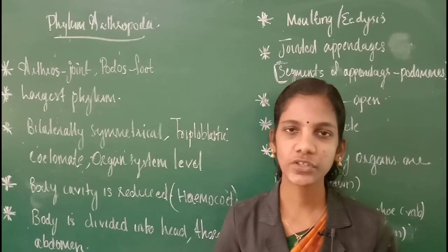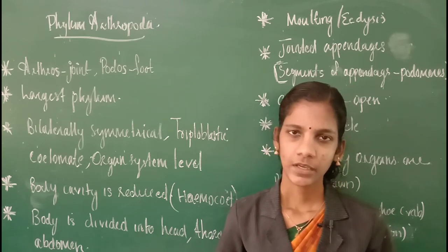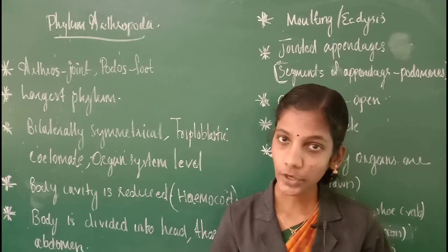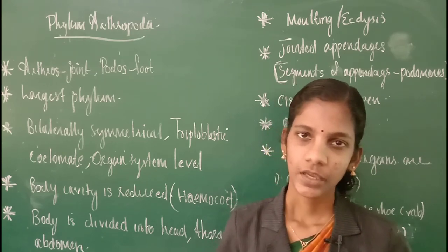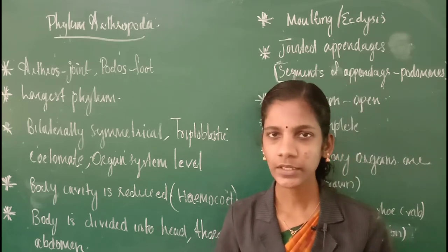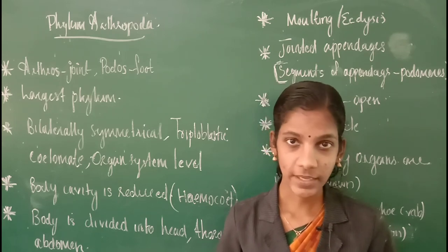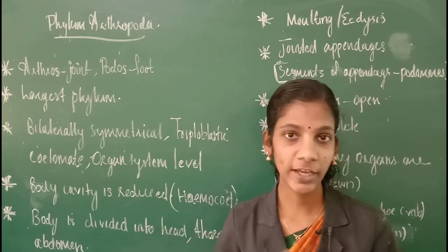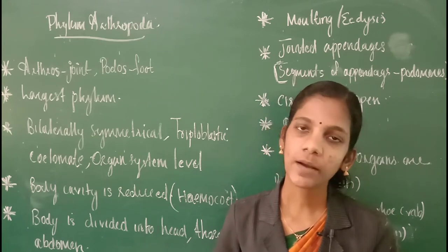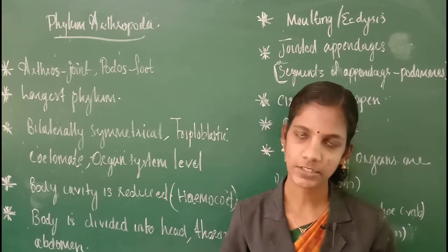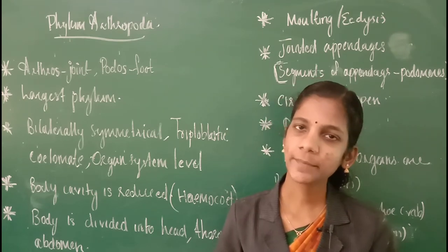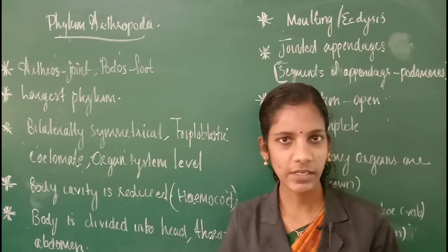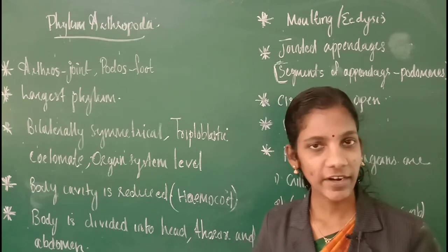Now we are going to study about the identifying features of the next phylum — phylum Arthropoda. The term Arthropoda was first introduced by Von Siebold. The term Arthropoda is derived from two Greek words: Arthros meaning joint, and Podos meaning foot. So Arthropoda means jointed-footed. All animals which will come under phylum Arthropoda are jointed-footed animals. This Arthropoda can be considered the largest phylum in the animal kingdom — around three-fourths of the total species of animals come under this particular phylum.